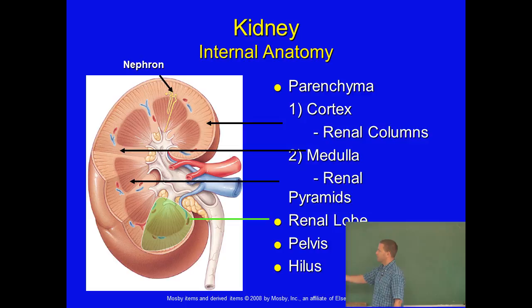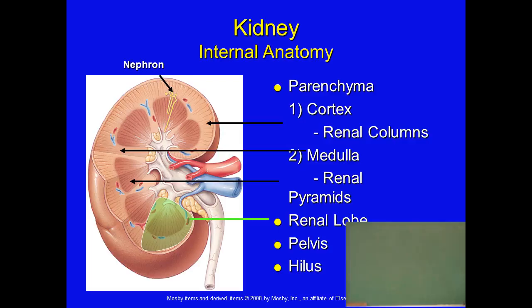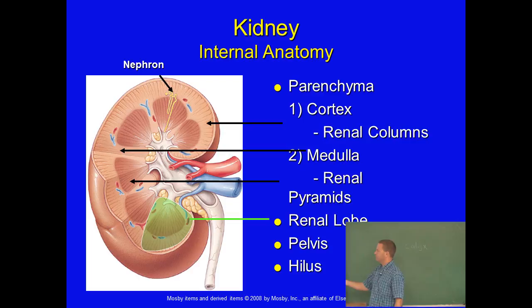All the fluid is drained from the renal pyramids into structures called the renal calyces — calyx is singular, calyces are plural. I call these the 'Shrek ears' because they look like Shrek's ears. The fluid from each pyramid drains into a minor calyx, which enters into a major calyx. The calyces drain the filtrate — now urine — into the renal pelvis, where it accumulates until drained by the ureters. The hilum is the indentation where blood vessels and ureters exit the kidney.